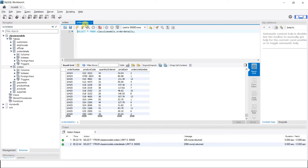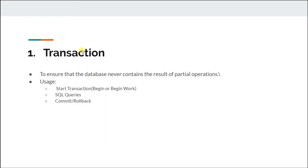We need transactions because we want to ensure the database never contains the result of partial operations. For example, if the new order's data is saved in the orders table but there is no corresponding data in the order_details table, that is a partial operation. Instead of saving half the data, we require it to be saved in both tables or not at all.